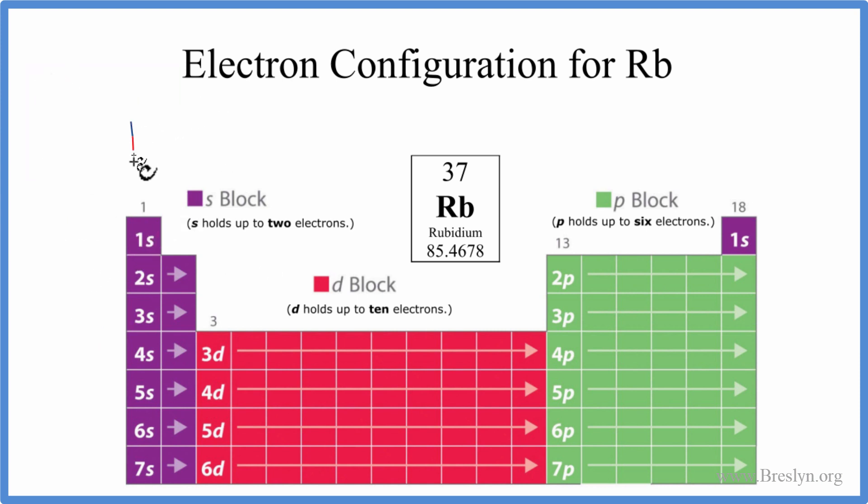We'll start out with 1s and s can hold up to 2. So we have 1, 2, we'll put 2 in there. We've used 2 electrons. We come over here to 2s. We'll put 2 in there. Now we've used 4. Then we go to 2p. P can hold up to 6. So 2p⁶. We've used 10 electrons.